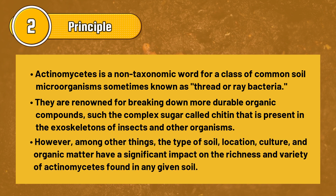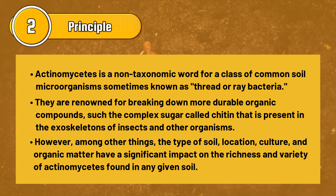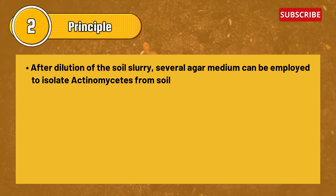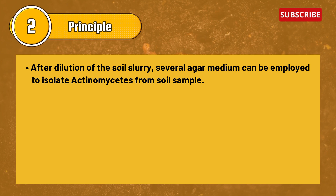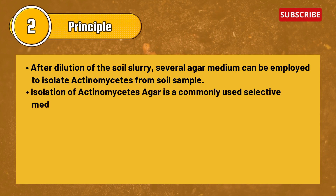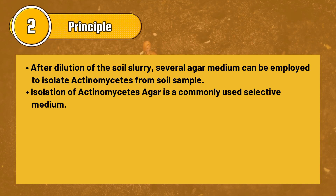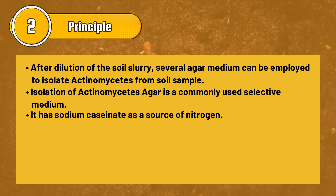The type of soil, location, culture, and organic matter have a significant impact on the richness and variety of actinomycetes found in any given soil. After dilution of the soil slurry, several agar media can be employed to isolate actinomycetes. Actinomycetes Isolation Agar is a commonly used selective medium. It has sodium caseinate as a source of nitrogen.